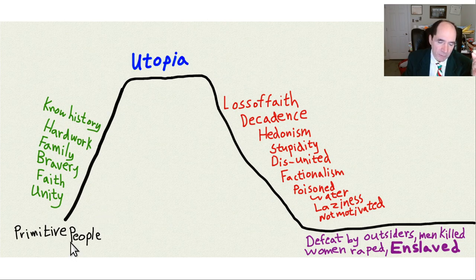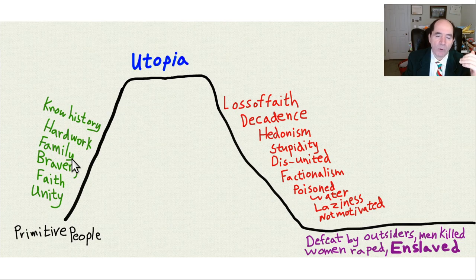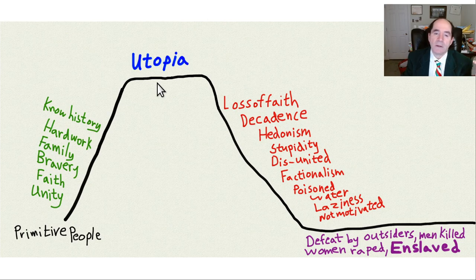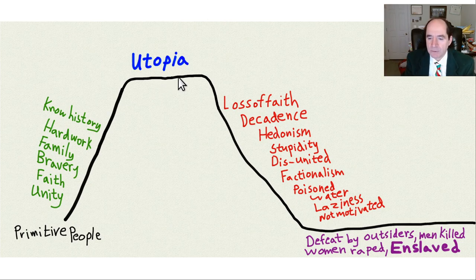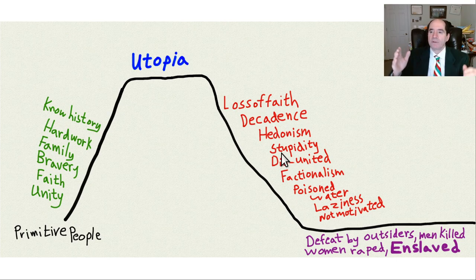Basically, you start out with primitive people who are united to help each other, have faith in their God, are brave enough to survive and protect their group, strongly supportive and nurturing of the family, very hardworking, and know the history of their people. They achieve a relative utopia — the summit of how happy things can be for people. But then they start losing their faith, mocking their religion, becoming decadent and hedonistic, becoming ignorant — no longer knowing their history. This is characteristic of what happens to groups in the Bible when they turn their back on God and go down.